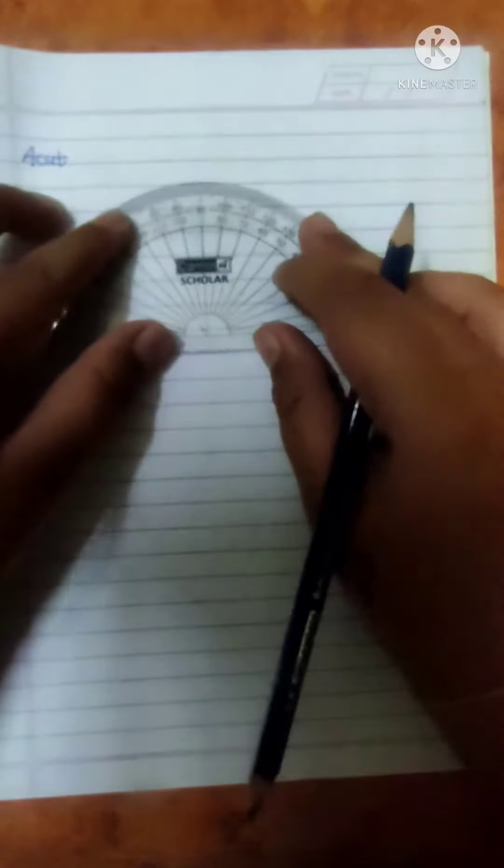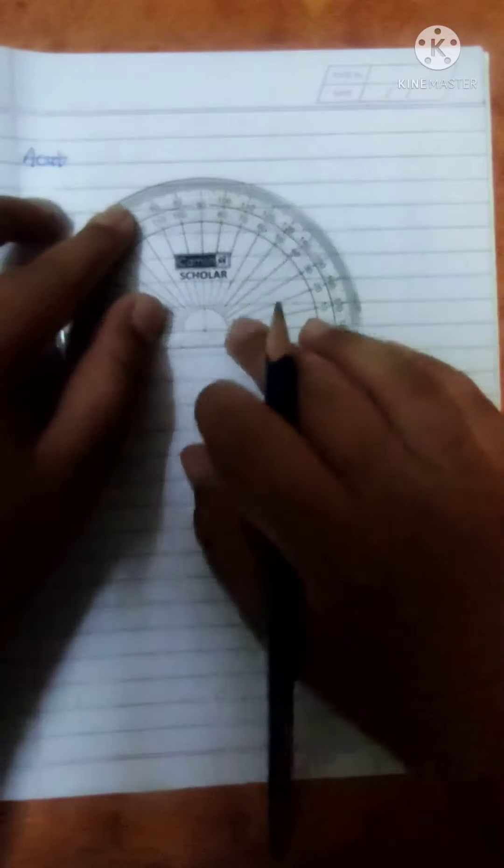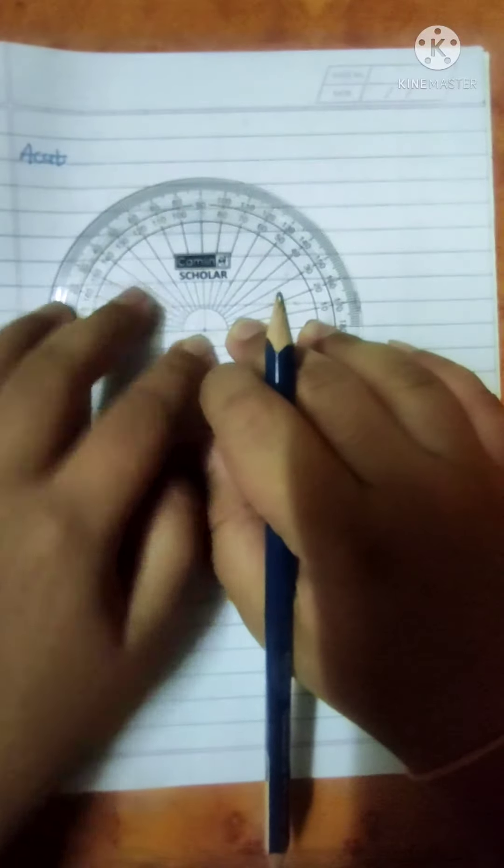First we will draw one point over here. Okay, the point is visible. Now we will put this point on that point. Center to center matched.